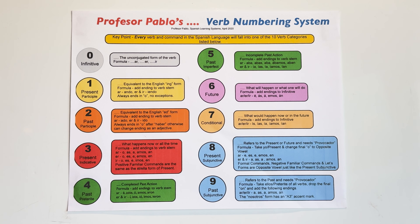So to recap the left side: zero is the infinitive, one is the present participle (the ING), two is the past participle (the ED), three is the present tense, and four is the past preterite. Now, number five — the right-hand column in green — the past imperfect is the second of two past tenses in Spanish. The preterite is used for a completed past action; the past imperfect is for an incomplete past action. You use the imperfect to describe how things used to be, what someone used to look like, things you would always do as a kid, or when you reminisce how something was.